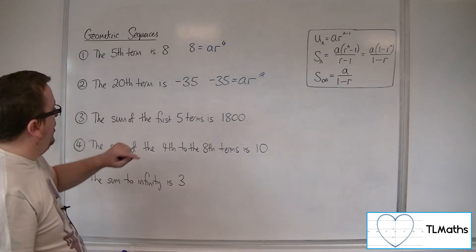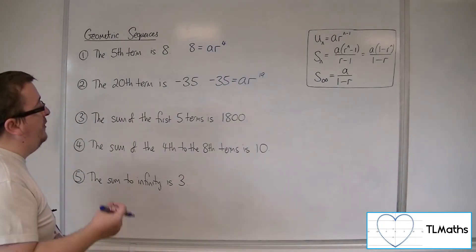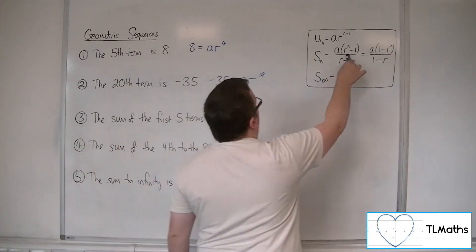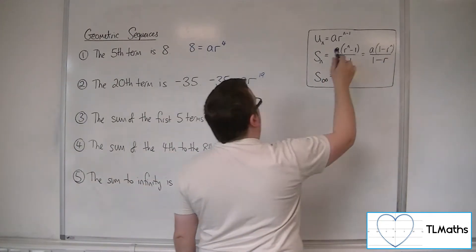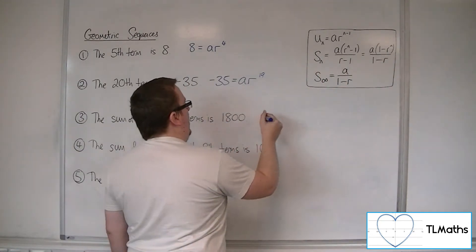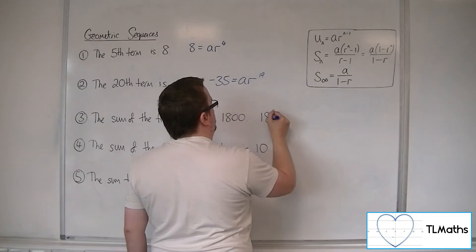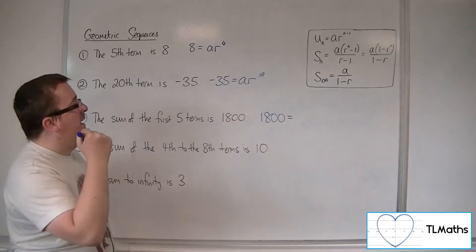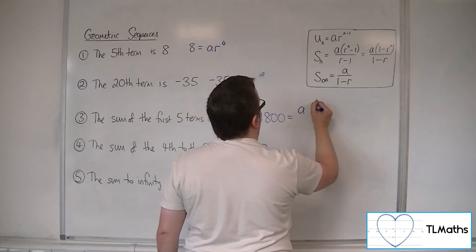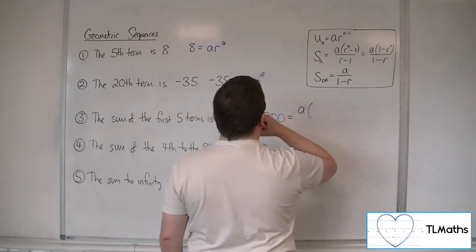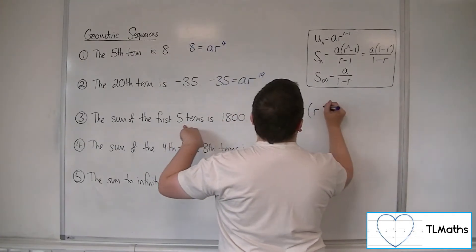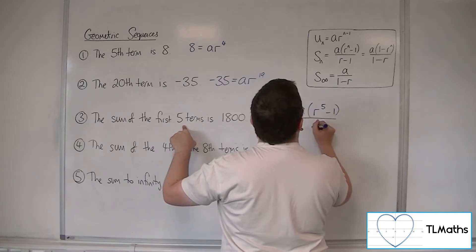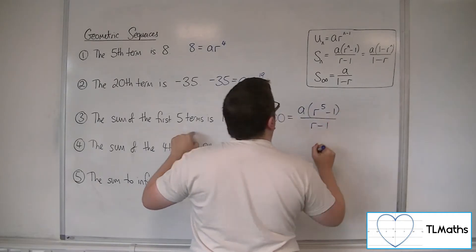Now if I'm told that the sum of the first five terms is 1,800, then I can use either of these formulas. So 1,800 is equal to a times r to the 5 minus 1, over r minus 1.